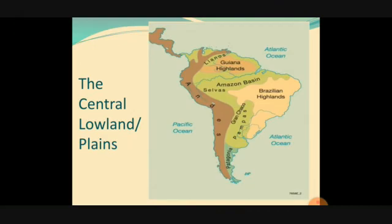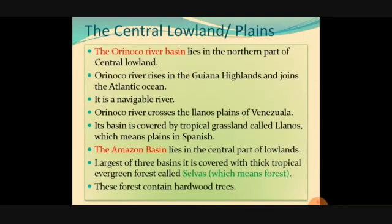You can see Selvas and Pampas here — grasslands and evergreen forests. Selvas are the evergreen forests, and they all come in the middle portion. That light green color is the Central Plains. Selvas are in the north and the Pampas are in the south. Pampas are the grasslands, and Selvas are the thick forests. In the Amazon basin, we can see the Amazon rainforest and the Selvas.